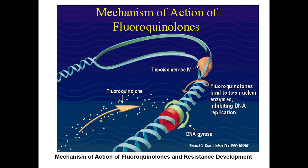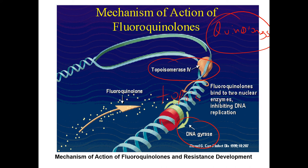Fluoroquinolones — specifically quinolones — target topoisomerase and DNA gyrase: your topoisomerases. They disrupt DNA replication because they inhibit the uncoiling of kinks in the DNA ahead of the replication fork.